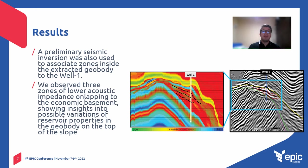A preliminary seismic inversion was also used to associate zones inside the structural geobodies to the well log. We observed three zones of lower acoustic impedance onlapping to the economic basement, showing insights into the possible variation of reservoir properties in the geobody on the top of the slope.